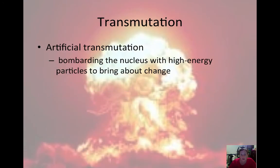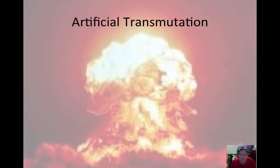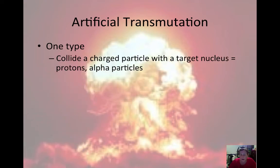Artificial transmutation is when we bombard the nucleus with high-energy particles to bring about this change. So this doesn't occur on its own. This is when humans are doing this with a machine. And artificial transmutation can be seen in two different ways.